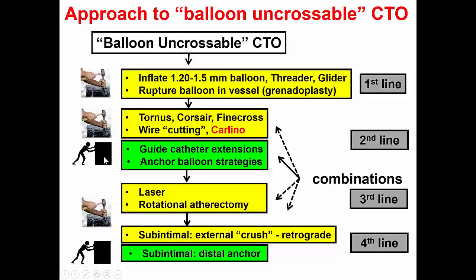and the other is to increase the guide catheter support to facilitate equipment delivery. The first step is to inflate small balloons or the threader combined balloon microcatheter trying to modify the proximal cap. And if that doesn't work, intentionally rupture the balloon in the so-called grenadoplasty or balloon-assisted microdissection.